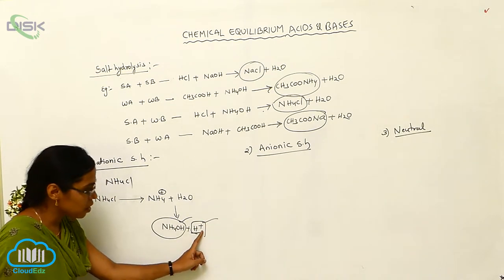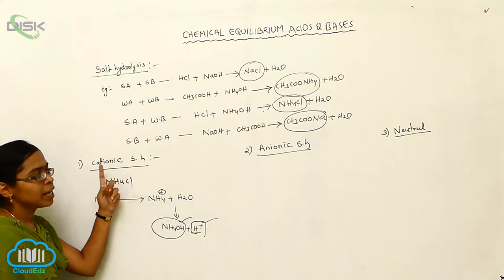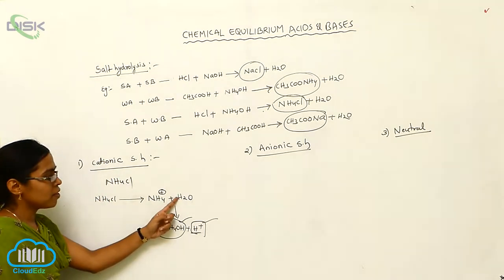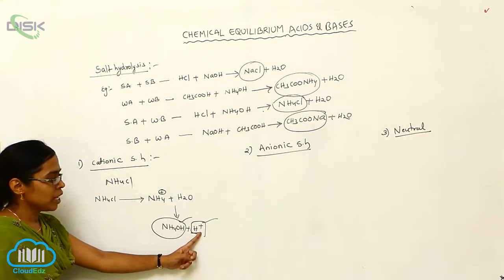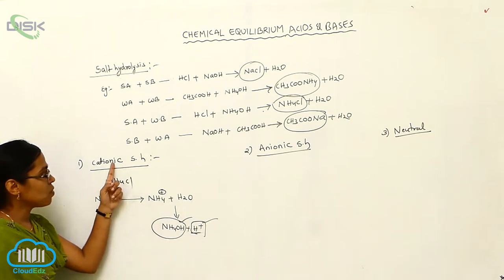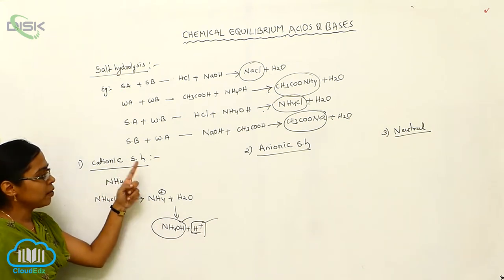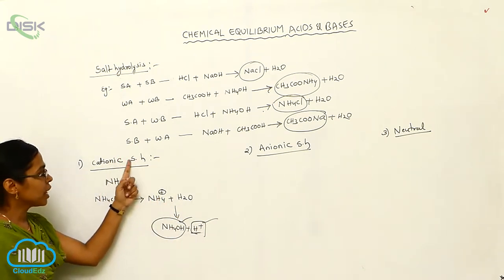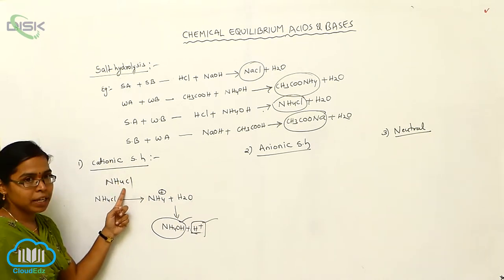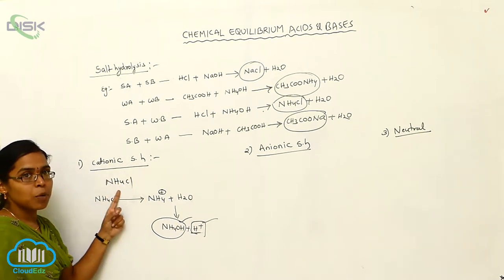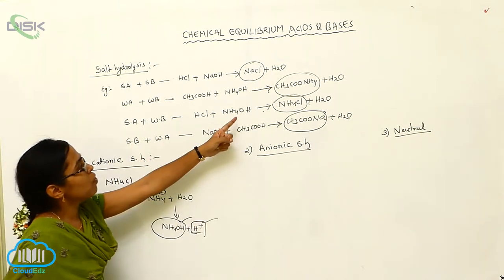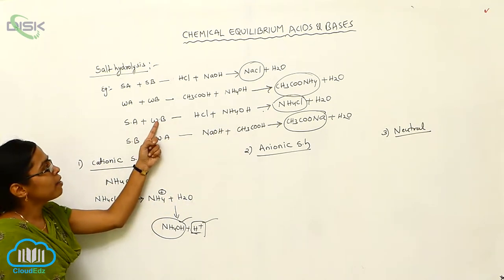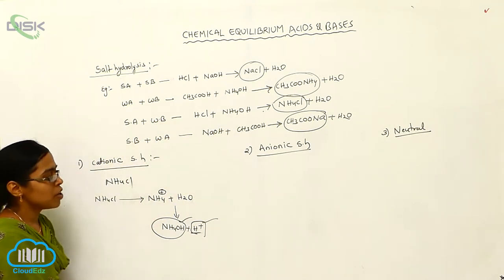H+ ions belong to the cation. The salt on hydrolysis which gives the cation is called cationic salt hydrolysis. The best example for cationic salt hydrolysis is ammonium chloride, which is formed by the combination of a strong acid and a weak base.